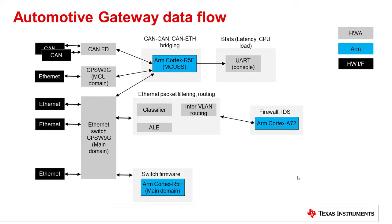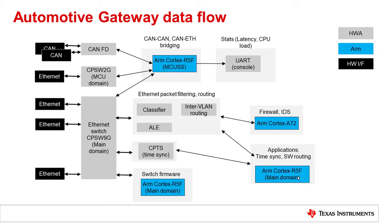If further processing of the packet stream is required, the traffic can be steered into one or more hardware queues for inspection from the A72 cores. This feature, along with the hardware policer block, can be used to implement a firewall and intrusion detection system on the A72 core. Time synchronization is supported using a dedicated hardware timestamping module. Additional applications like Precision Time Protocol for time synchronization and software-based routing can be run from the R5F core, thereby completely offloading the A72 cores. These can be run from the same R5F core that hosts the switch firmware.